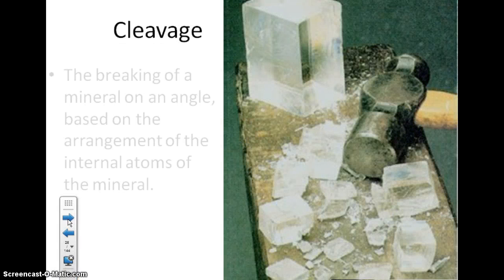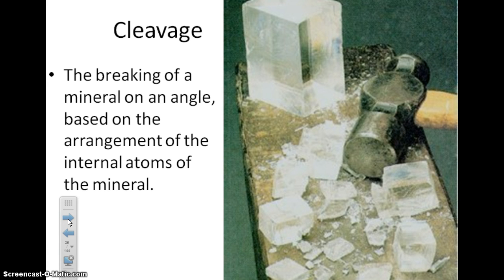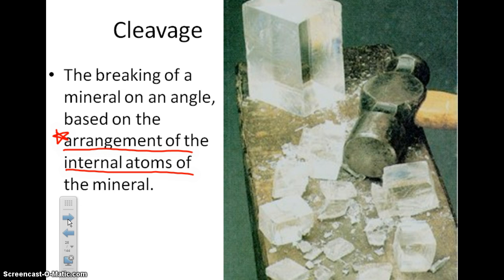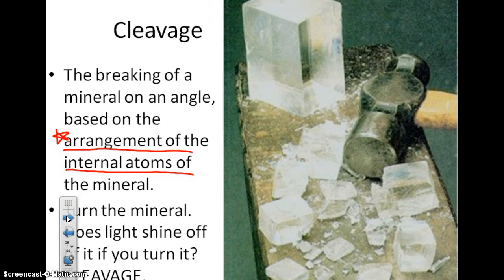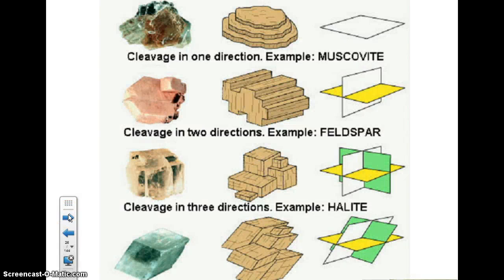So there's fracture, and here's cleavage — the breaking of a mineral on an angle based on the arrangement of its internal atoms. What determines a mineral's cleavage is its internal arrangement of atoms — those words are very important, make a jot note of that. Now, to tell the difference between fracture and cleavage, you turn the mineral and look carefully: does it have little flat sides that reflect light? If it reflects light off very little flat sides, it has cleavage.